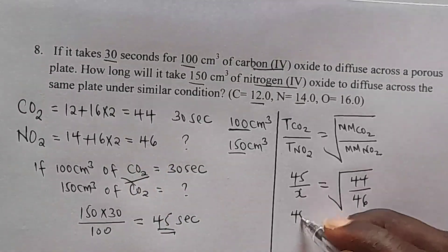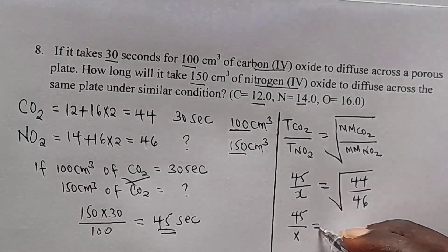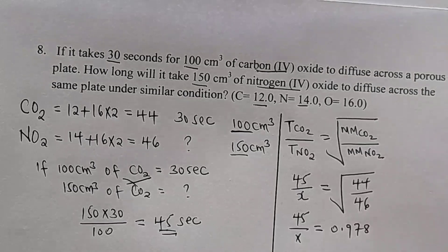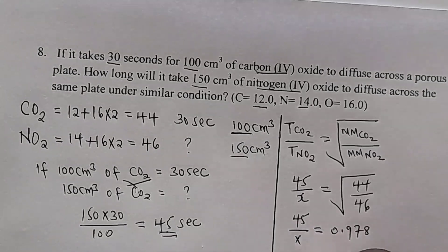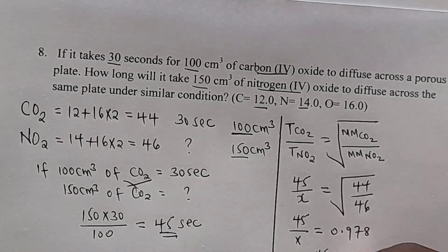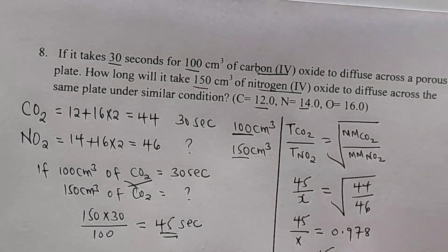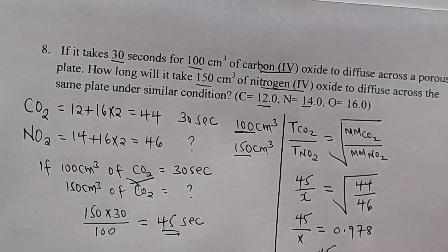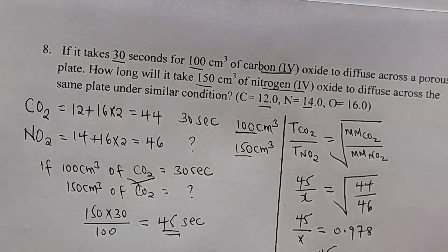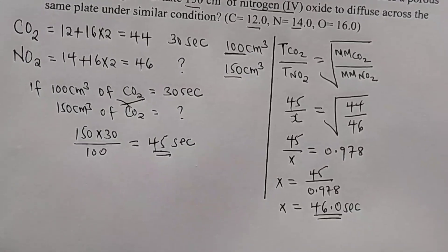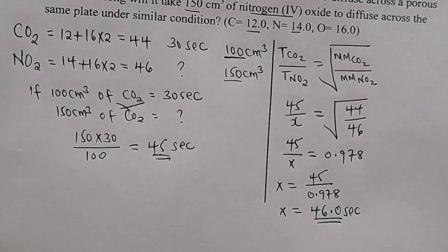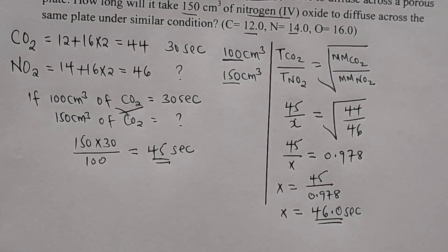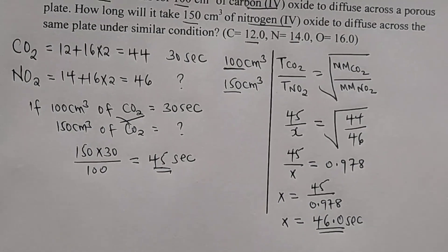So we have 45 over x equal to the square root of 44 over 46, which gives 0.978. To get x: x = 45 ÷ 0.978 = 46.0 seconds. That is the time for nitrogen dioxide to diffuse through 150 cm³.